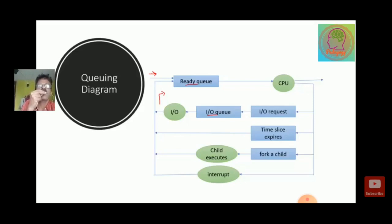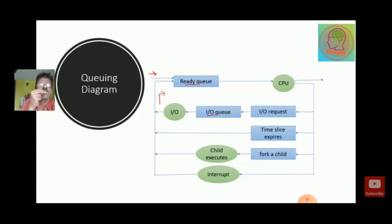If a process is interrupted by any kind of interrupt — as we have discussed in our event handling video — the process again goes into the ready queue. So this is the process scheduling queuing diagram, and to recall: ready queue, job queue, and device queue are all required for performing process scheduling by the CPU.